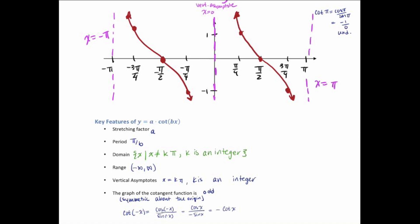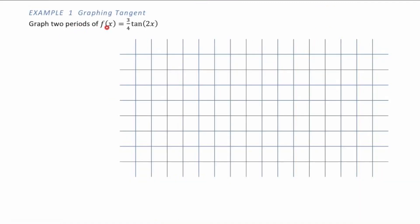Graph two periods of f(x) = (3/4)·tan(2x). Let's begin by identifying several key factors. First, our stretching factor — that's the value multiplied on the outside of our function, so a equals 3/4. Since it is less than 1, this will compress our graph.